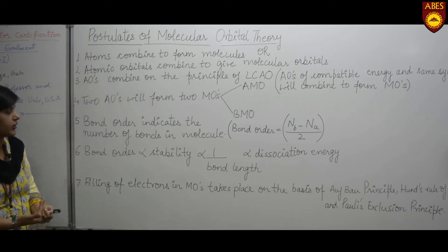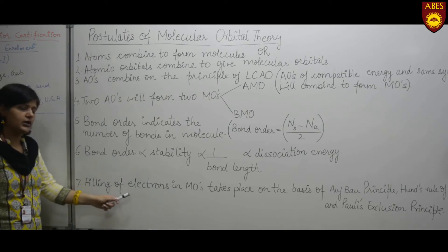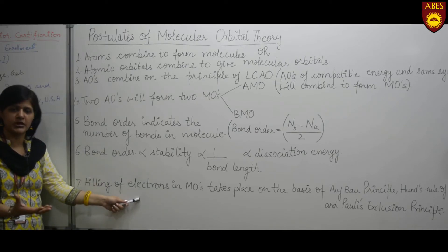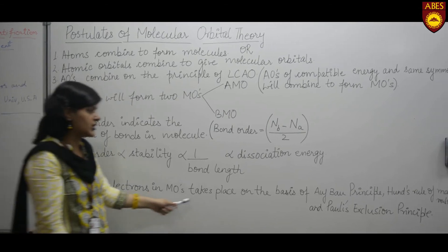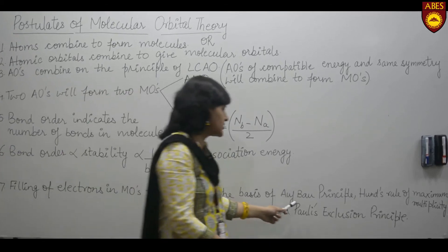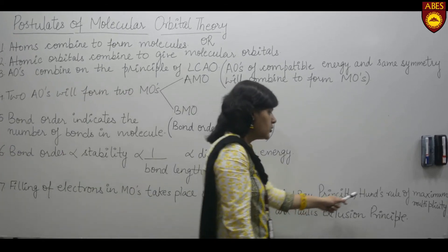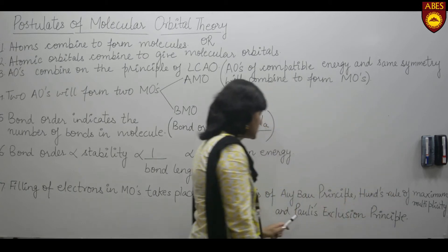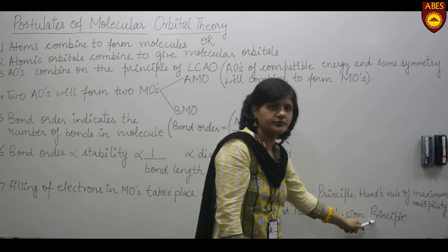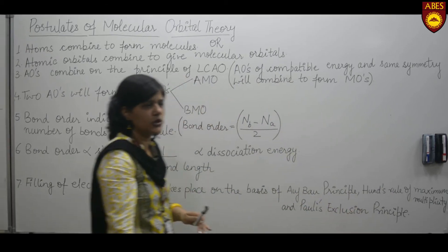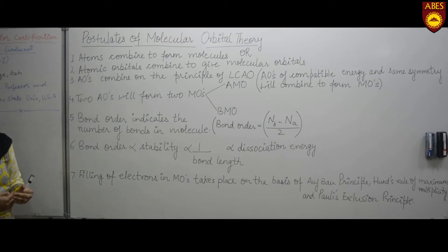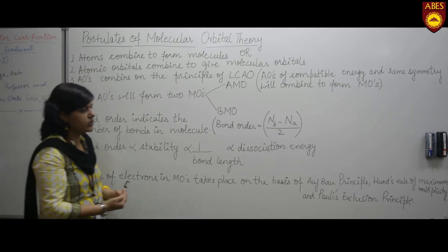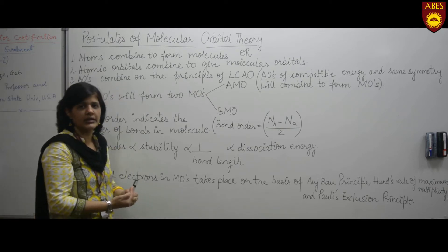Filling of electrons after formation of molecular orbitals takes place on the basis of the Aufbau principle, Hund's rule of maximum multiplicity, and Pauli's exclusion principle. The filling of electrons always takes place in the same manner whether it is an atomic orbital or a molecular orbital — the same rules are followed for filling electrons in these orbitals.